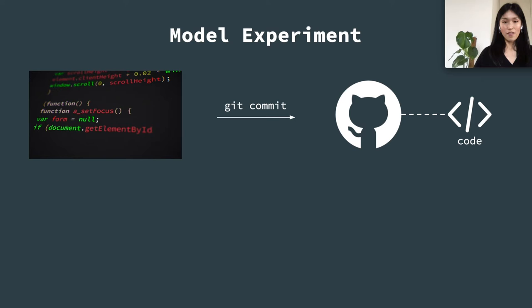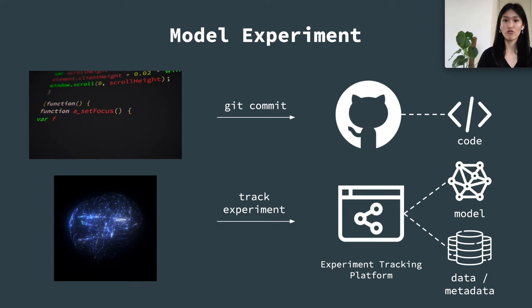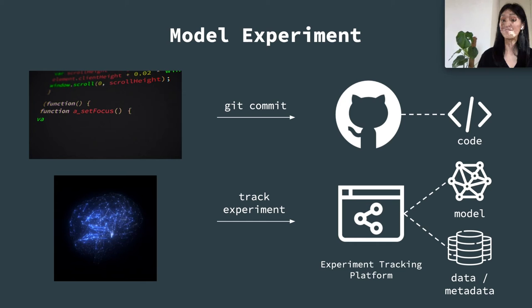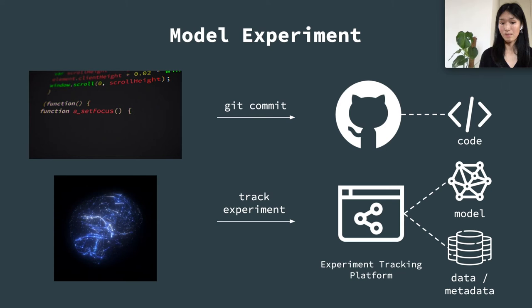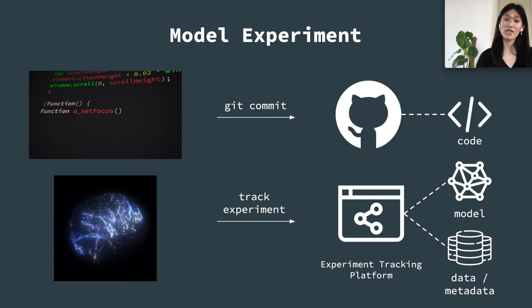Think about when you do software development: you have the function logic in mind and want to test it. So you write some code, run it locally, and test it to see whether it works. If it does, you commit it to the source control repository. Similarly, during model development, we need to train a model with different feature data as well as model configuration on top of the function code. Once the model is trained, we test it to see how it performs when making predictions. This iterative process is called an experiment. We track all the experiments we run using an experiment tracking component in the MLOps system.